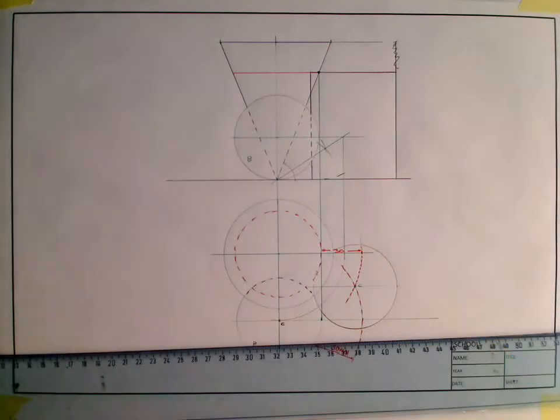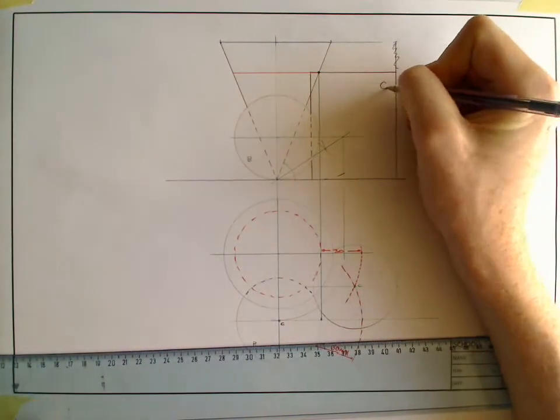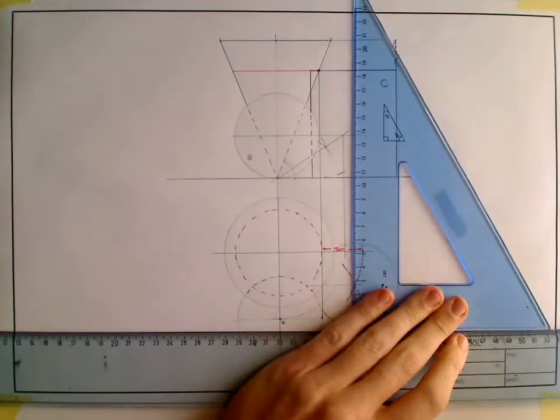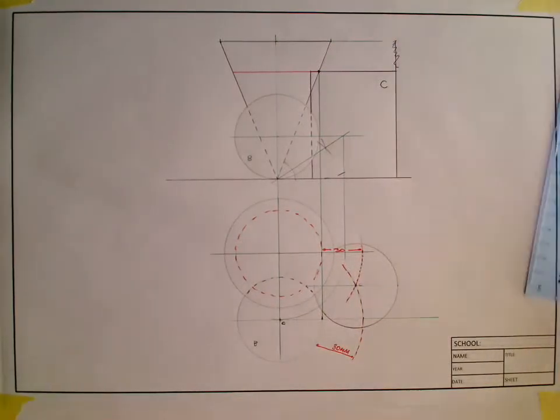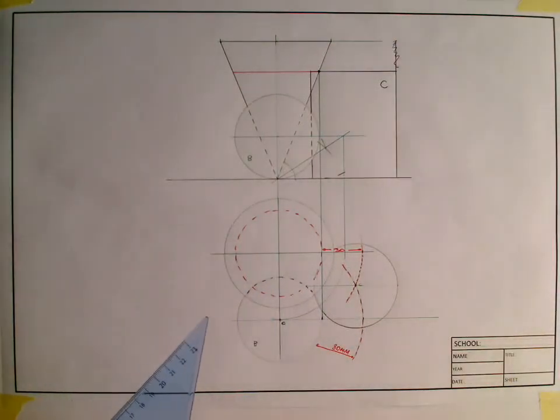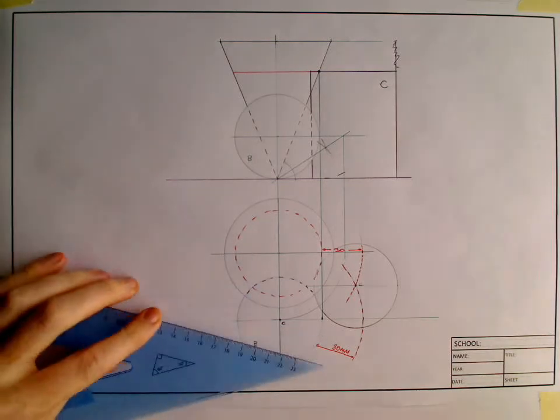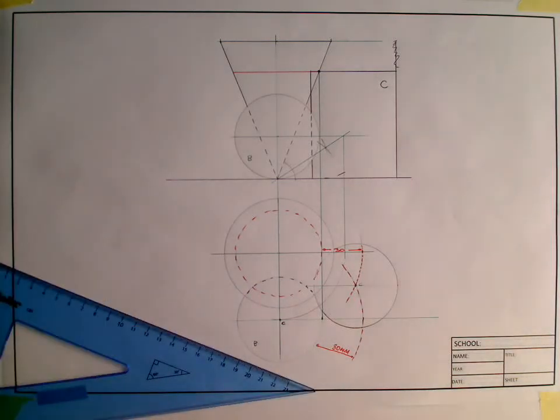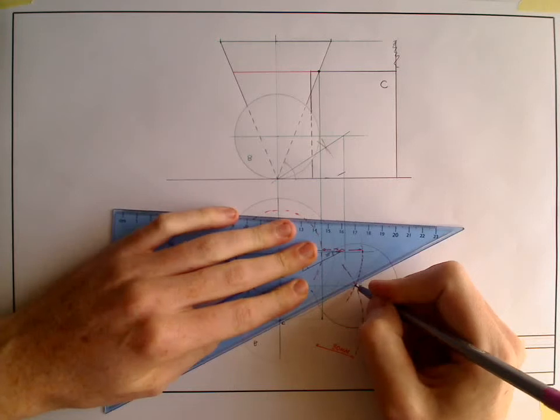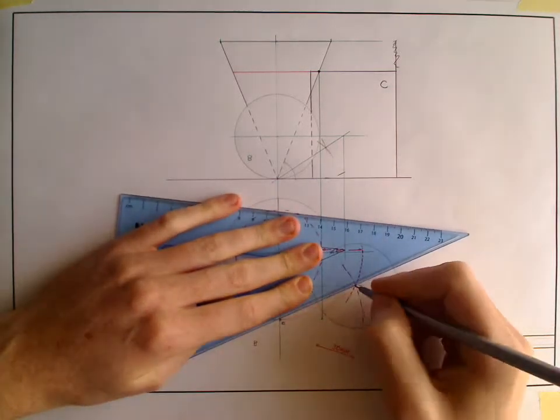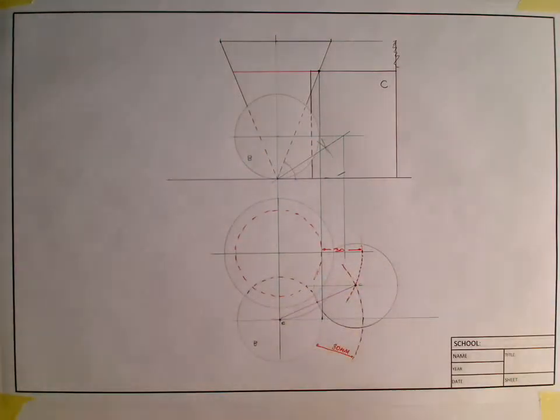That there is my cylinder there, cylinder C. To get the point of contact, very simple. Join the centers. And bring it straight up.